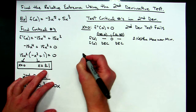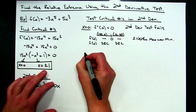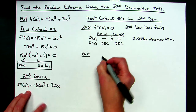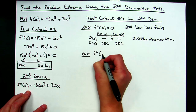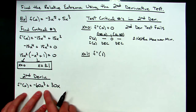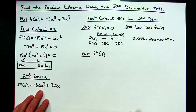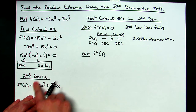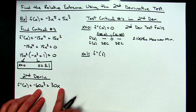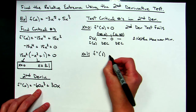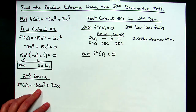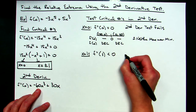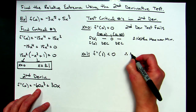Now let's test x equals one by plugging it into the second derivative. I don't need an exact value — I just need to know if it's less than or greater than zero. Plugging in one, the negative 60 term is clearly a bigger negative number than the positive 30 term, so overall it's less than zero. Thinking opposite: less than zero means I have a relative maximum at x equals one.